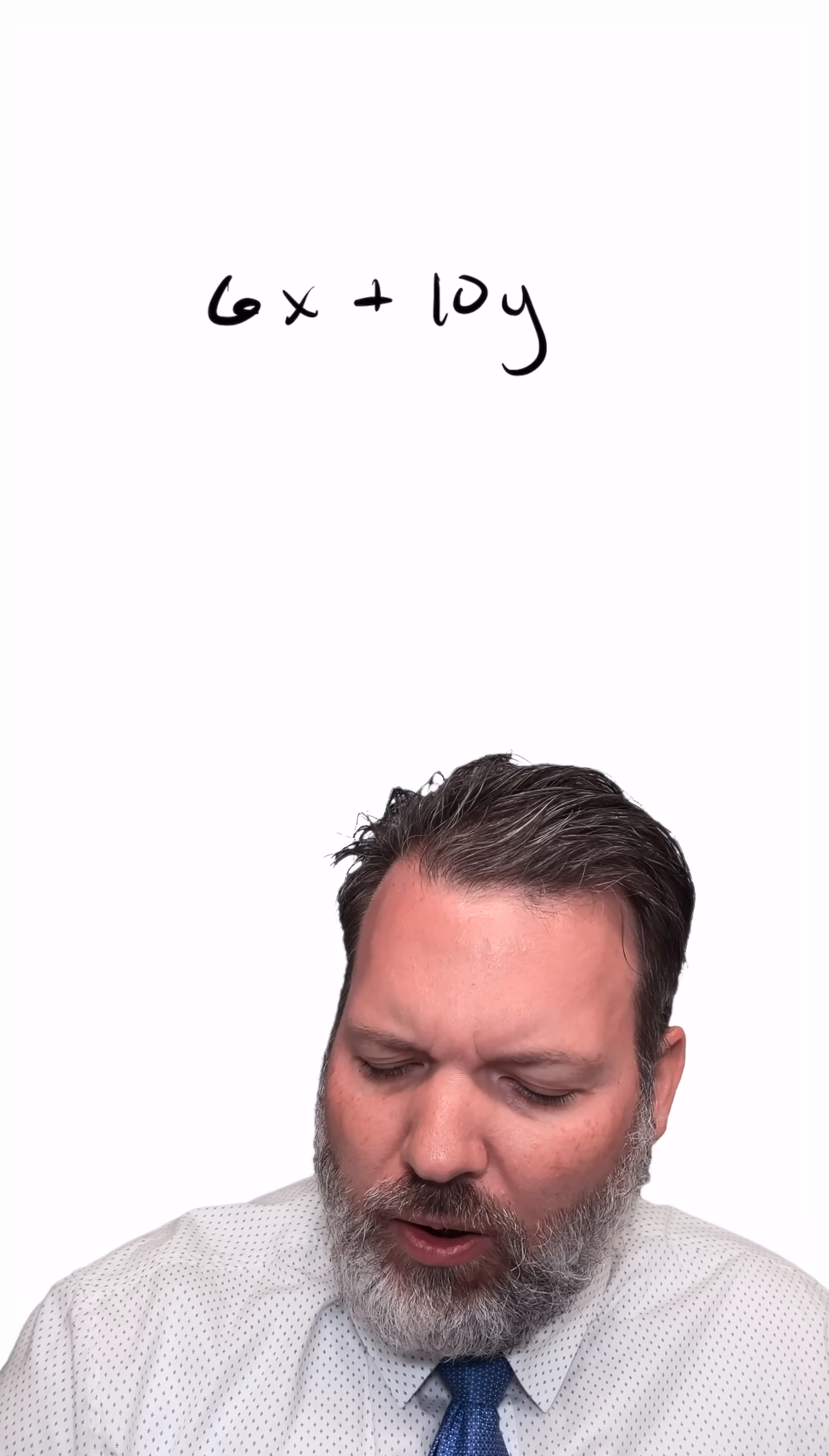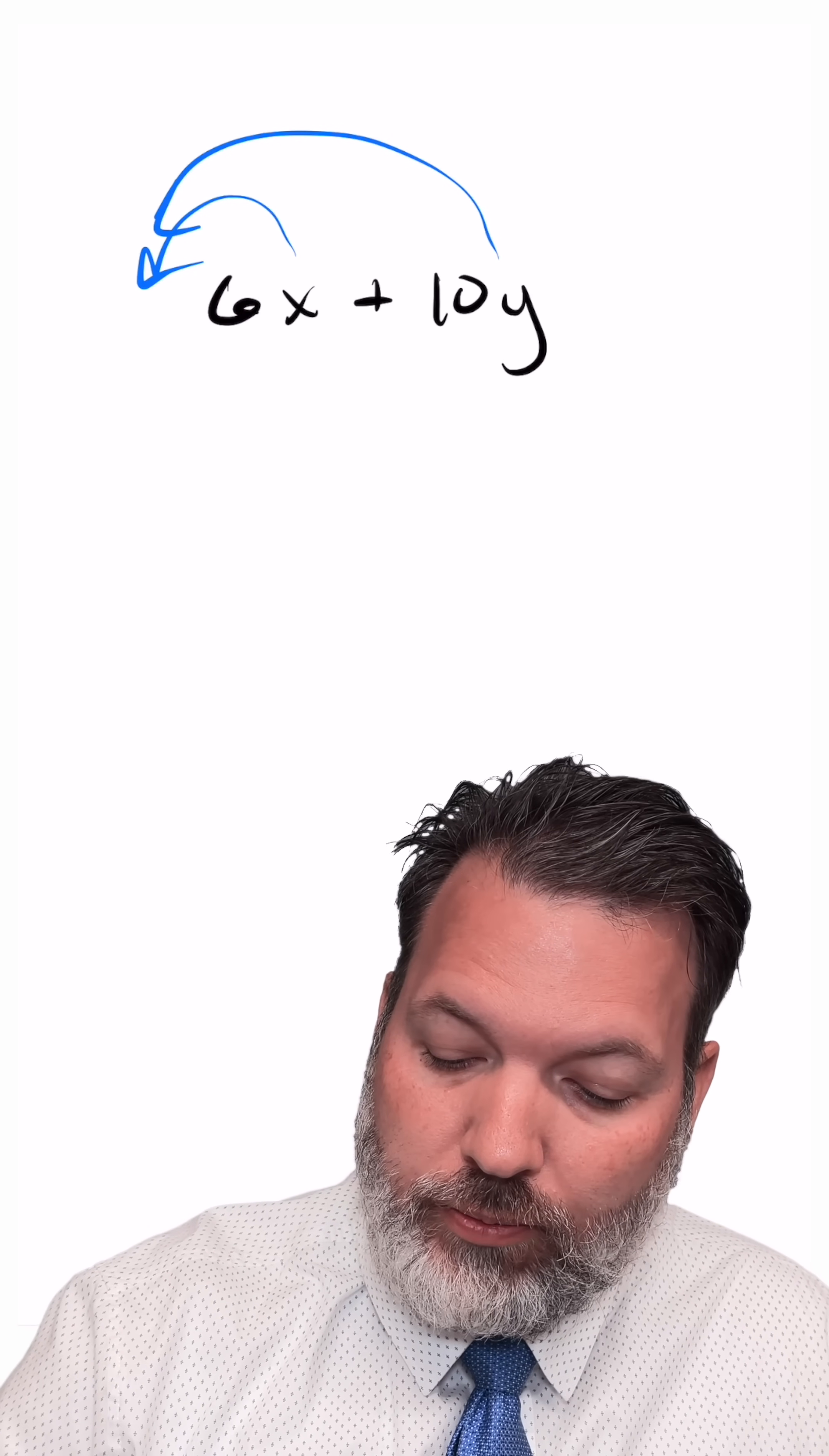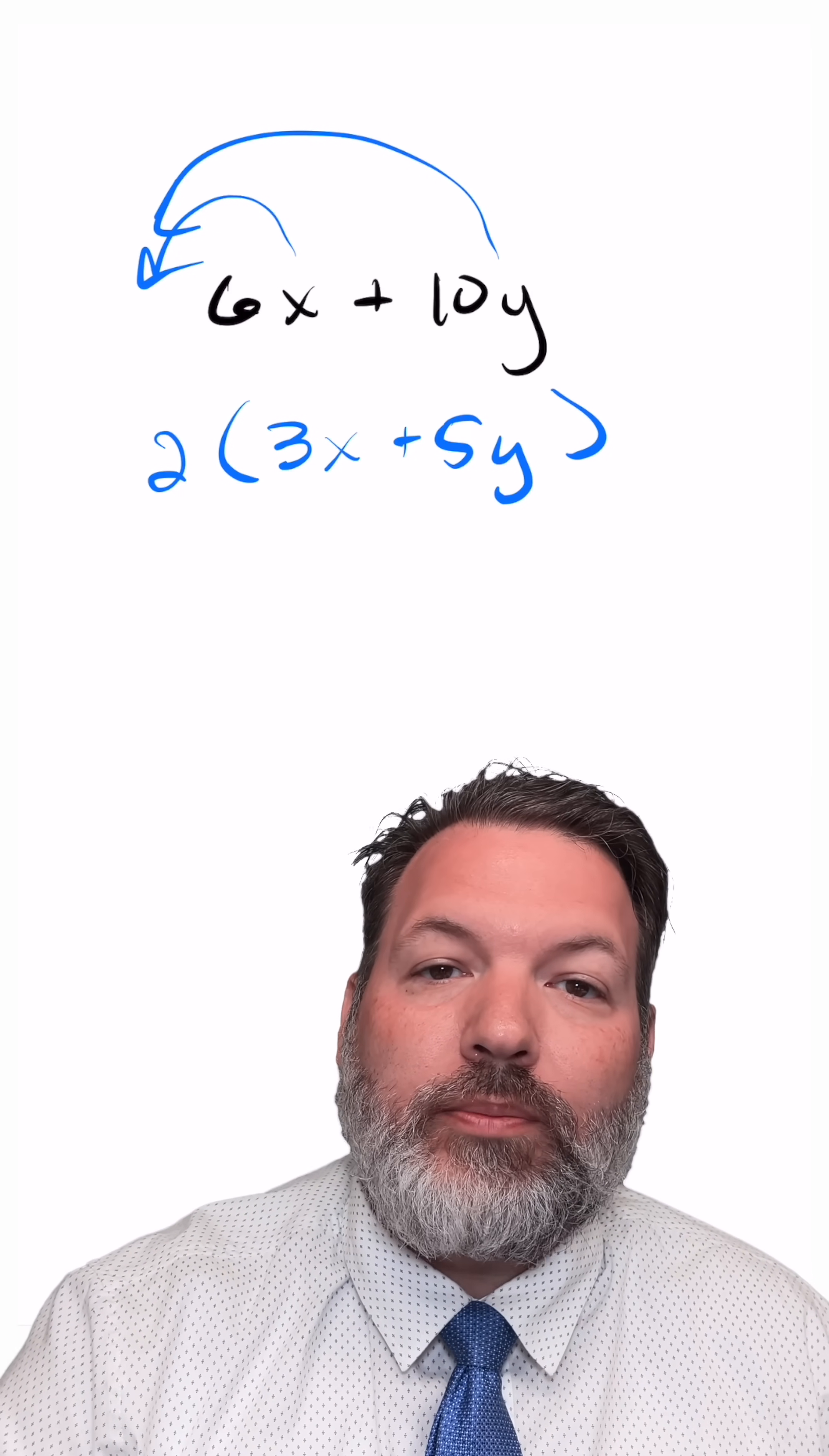We can recognize, 6x and 10y, both of those could have come from a multiplication by 2. So let's actually draw out the 2 from each of these terms. 6x is the same thing as 2 times 3x. 10y is the same thing as 2 times 5y. And so that common 2 comes out to the front and then it leaves us with this sum in parentheses.